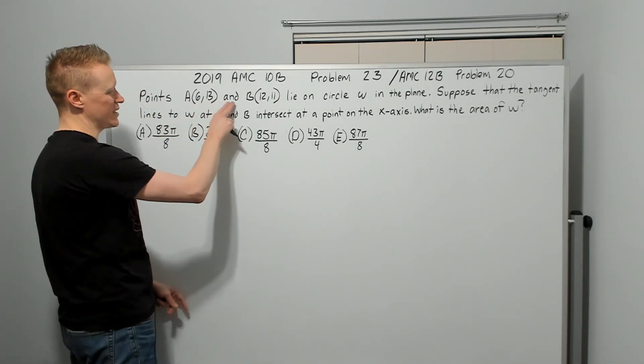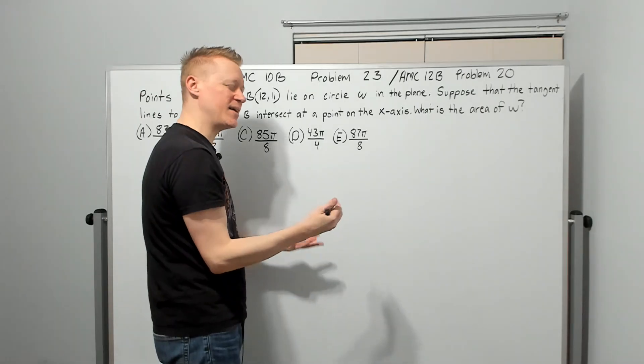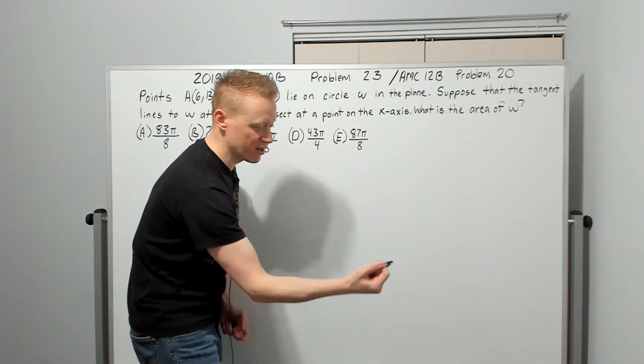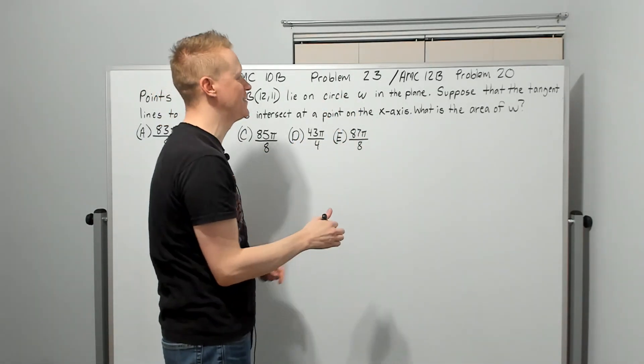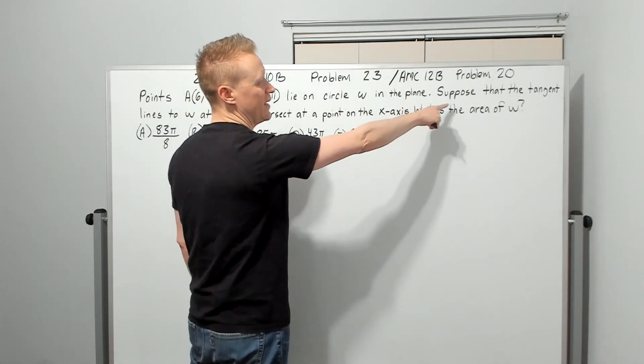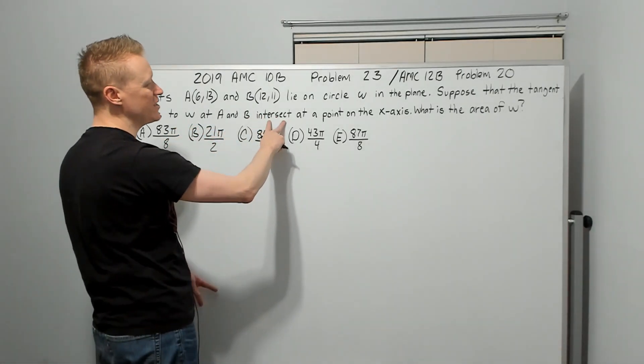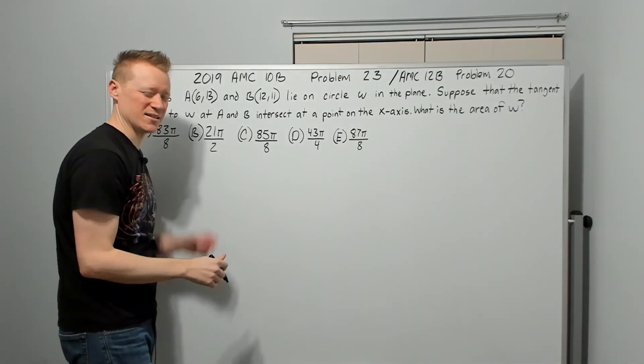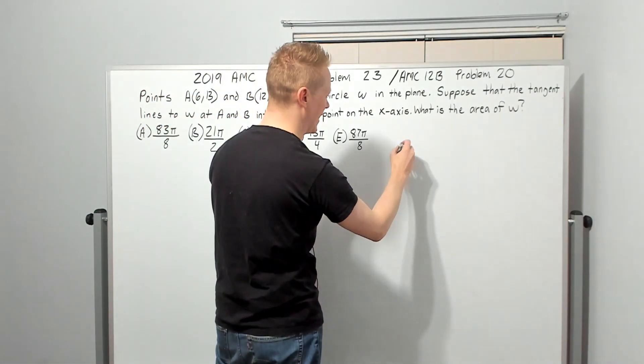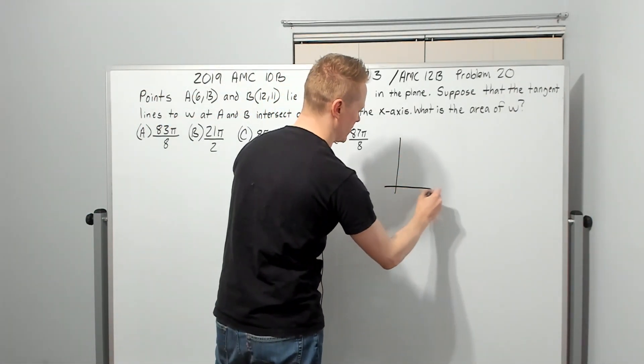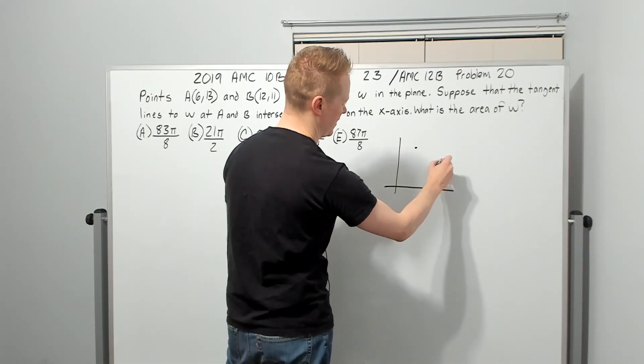So again, it's the 2019 AMC 10B Problem 23, which was also the 12B Problem 20. I will get to problem requests as soon as I am able, I've got a lot of other requests that aren't on there. So it's going to slow me down a little bit. Points A(6,13) and B(12,11) lie on a circle omega. It looks like W though, right? I mean, it's a lowercase omega in the original problem, but with my marker, I can't quite draw Greek letters, but the Greeks don't care if you call it W, right? So the circle W in the plane, suppose that the tangent lines to circle W at A and B intersect at a point on the x-axis. We're kind of losing track of what's going on probably at this point. Let's make sense by adding the points to a diagram.